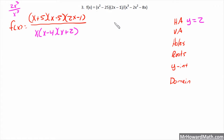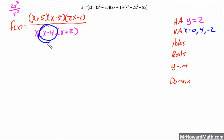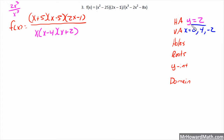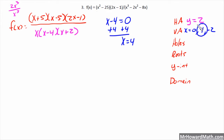Vertical asymptotes occur from factors in the denominator that do not cancel. None of these denominator factors cancel, so all three give us vertical asymptotes at x = 0, x = 4, and x = -2. Remember that between your factors and your solutions, the signs will always be opposite — for example, x - 4 set equal to 0 gives x = 4.